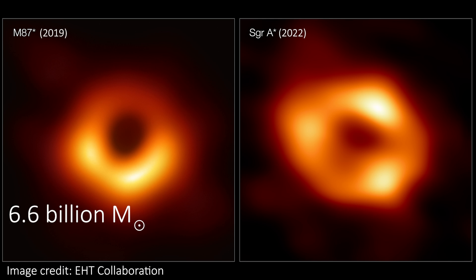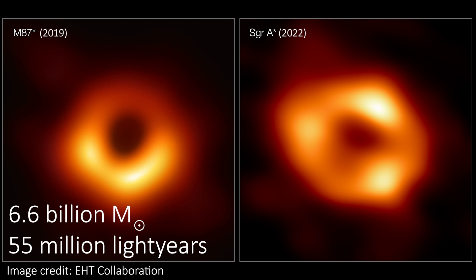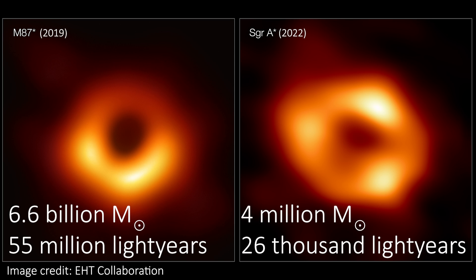M87's black hole is a 6.6 billion solar mass behemoth that's 55 million light years away, while Sagittarius A-star is only 4 million solar masses and only 26,000 light years away. Data for both images was taken all the way back in 2017, and it took two years to get the M87 image and five years to get Sagittarius A-star. So why did it take so long, and why was there such a difference in these times?